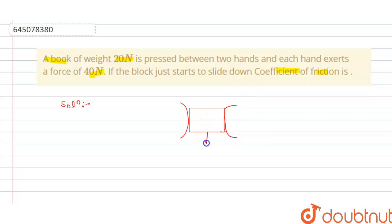We know that weight, that is mg, is acting downward - mass into acceleration due to gravity - so it is given to us as 20 newton. And we know that when they are pressed, friction force is acting. Friction force acting here and friction force is acting here.